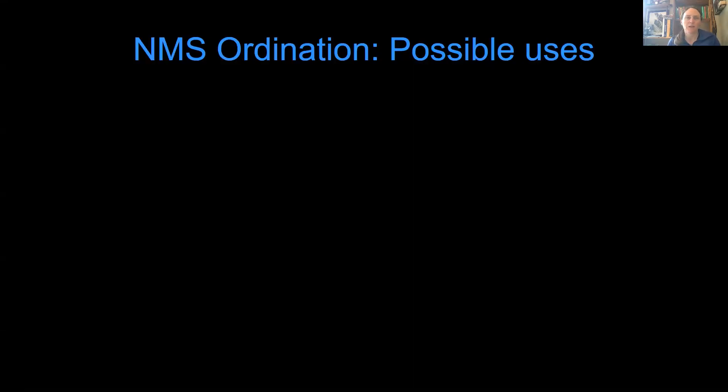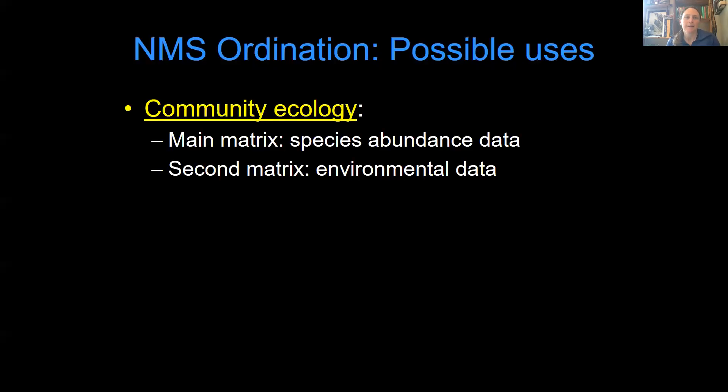All right. So back to NMS ordination. We're going to use an example from community ecology because this class is focused on ecology. In this case, a lot of programs will ask you to have your data organized into what's called a main matrix with all of your species abundance data and a second matrix with all the environmental data that you might have.